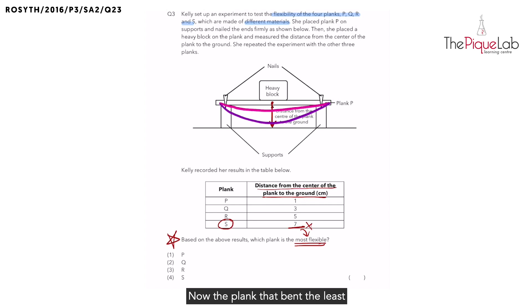Now, the plank that bent the least would have the greatest distance from the centre of the plank to the ground. What do I mean? If you look carefully, the one that bent the least, which is the pink one, would have the greatest distance, which is 7 cm.